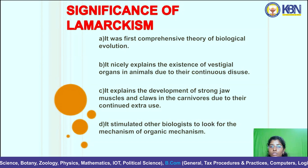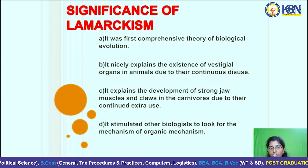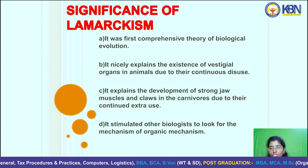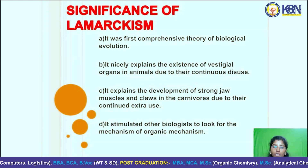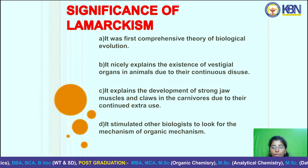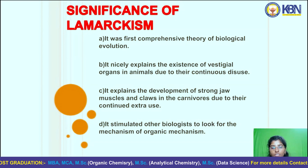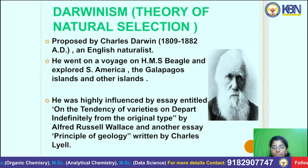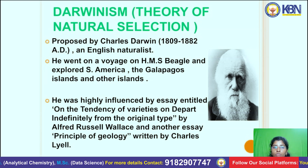The significance of Lamarckism: it was the first comprehensive theory of biological evolution. It nicely explains the existence of vestigial organs in animals due to their continuous disuse. It explains the development of strong jaw muscles and claws in carnivores due to their continued extra use. It also stimulated other biologists to look for the mechanism of organic evolution.